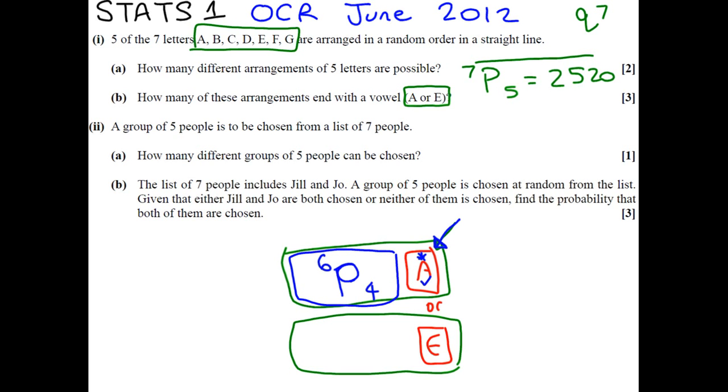We can do that for the A, and don't forget E could be in here somewhere as well, and we can also do the same thing for the E, so it's going to be 6P4 for this as well. Hence, you have to do for your answer, 6P4, times by 2, and you get 720.